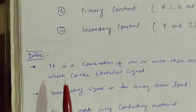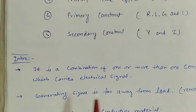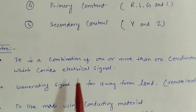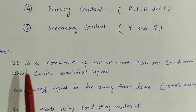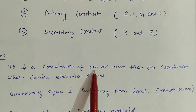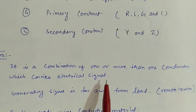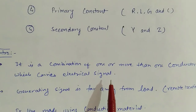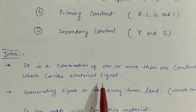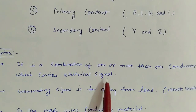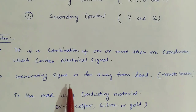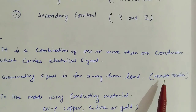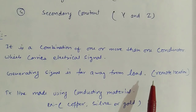Now I am going to start the introduction. A transmission line is a combination of one or more than one conductor which carries the electrical signal. Any transmission line needs one conductor, two conductors, or more than two conductors to carry the electrical signal. We need a transmission line because the generating signal is far away from the load, which can be in a remote location like a household or other supply requirements.